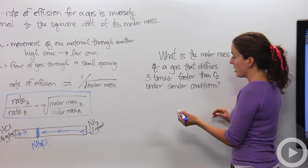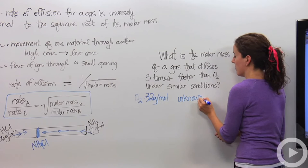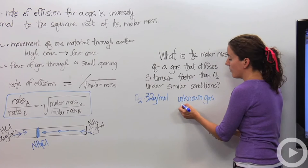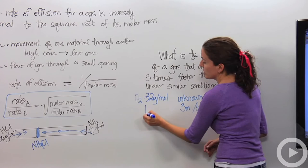What is the molar mass of a gas that diffuses three times faster than oxygen under similar conditions? Okay. So oxygen has a molar mass of 32 grams per mole. And this unknown gas, we don't know. This guy travels three times faster. So I'm going to say it travels three meters per second. It makes more sense.